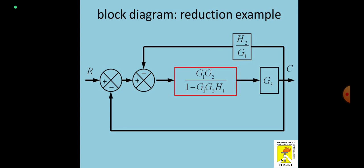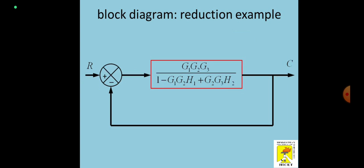Here again, using the first rule, both are in cascade, so I can multiply G3: G1·G2·G3 / (1 − G1·G2·H1). Looking at the second summing point, we may get a negative feedback system: G / (1 + G·H), where the feedback H2 is divided by G1. This entire system I can call a unity feedback system, so my H value is 1. My G value is G1·G2·G3 / (1 − G1·G2·H1 + G2·G3·H2). Applying G / (1 + G·H) with H = 1 gives the final answer.